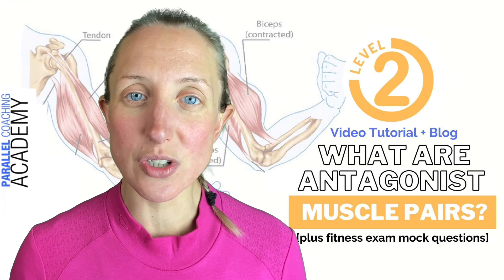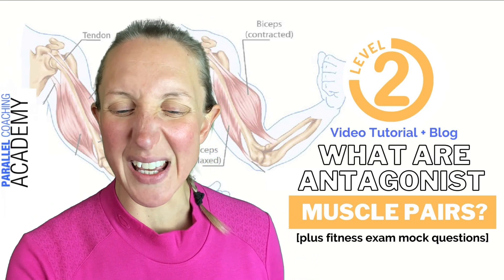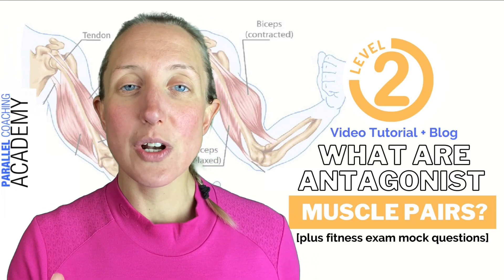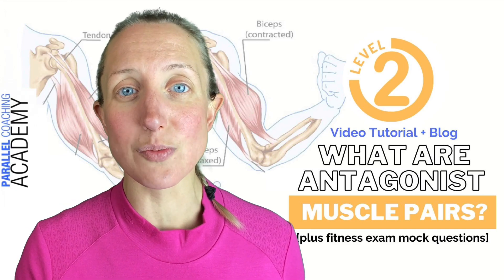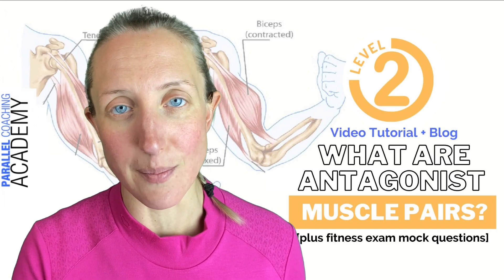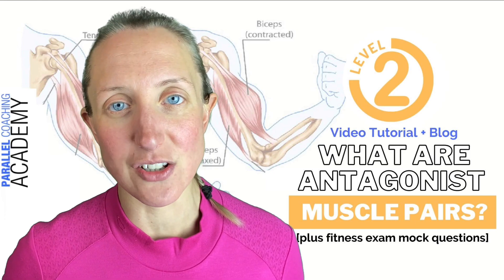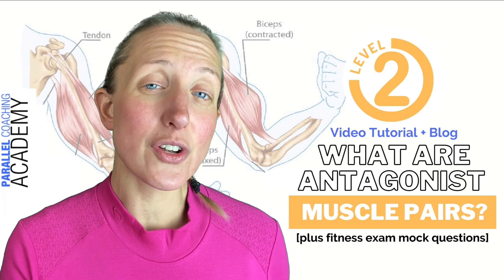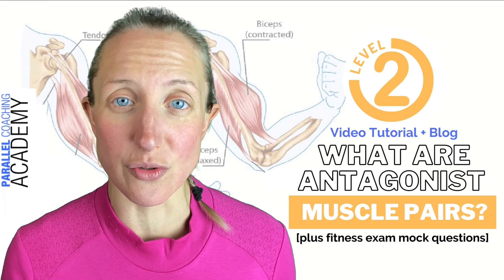Some other pairings can get a little confusing. Let's start with the glutes. The glutes are renowned for doing hip extension, so we're looking for the opposing muscle to do flexion of the hip — which has to be the hip flexors, your iliopsoas or even your rectus femoris, which is part of your quadriceps.